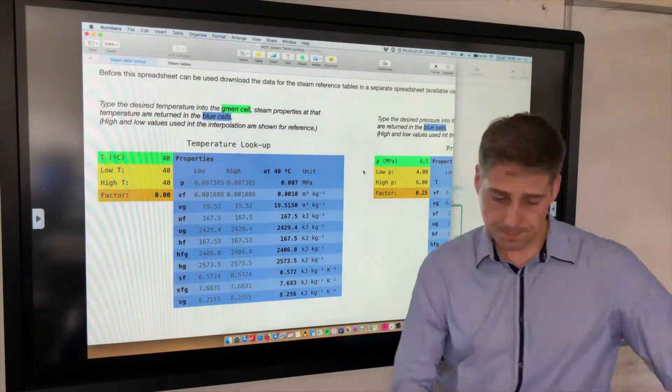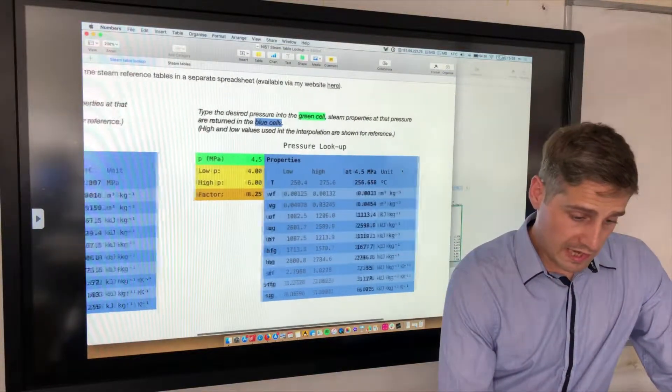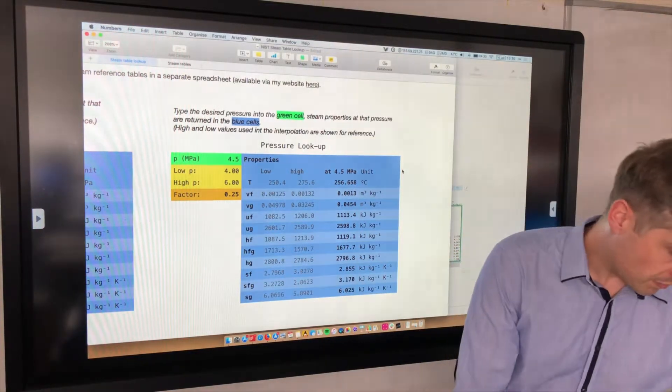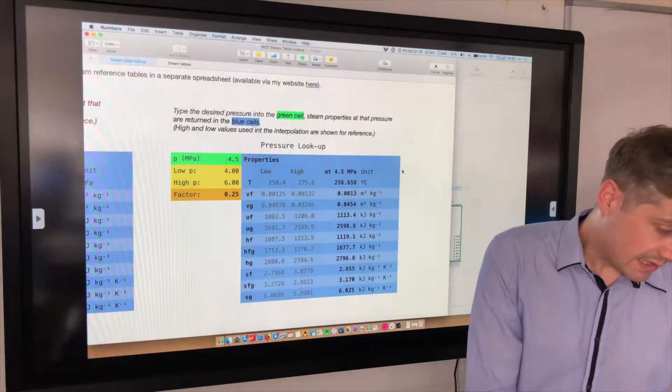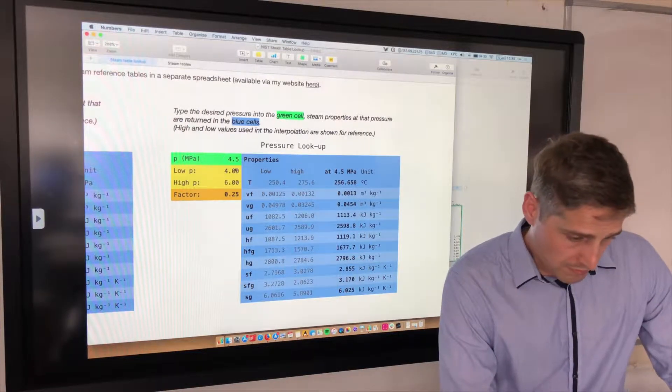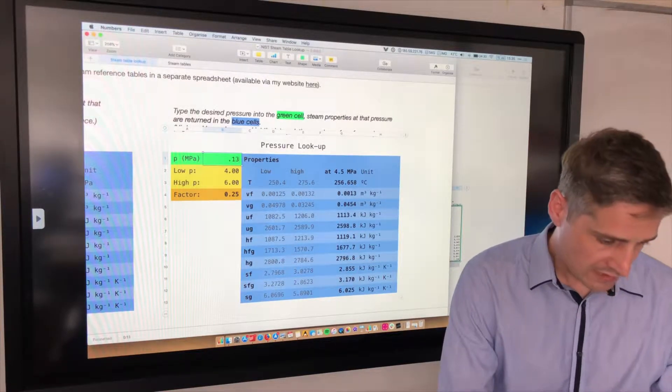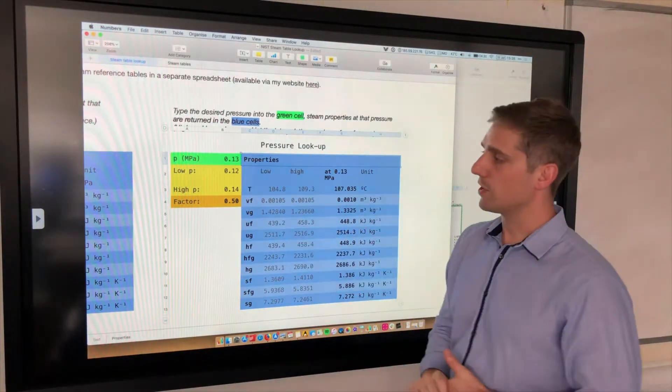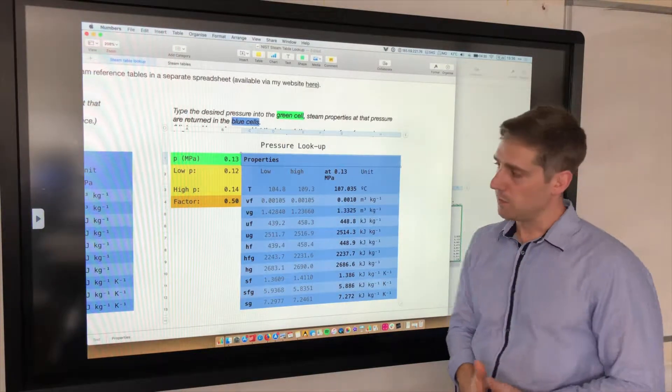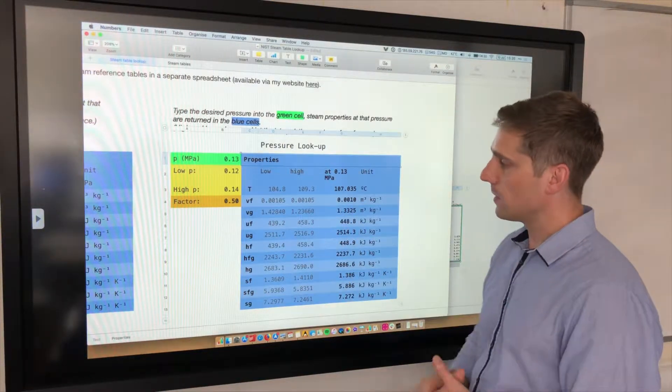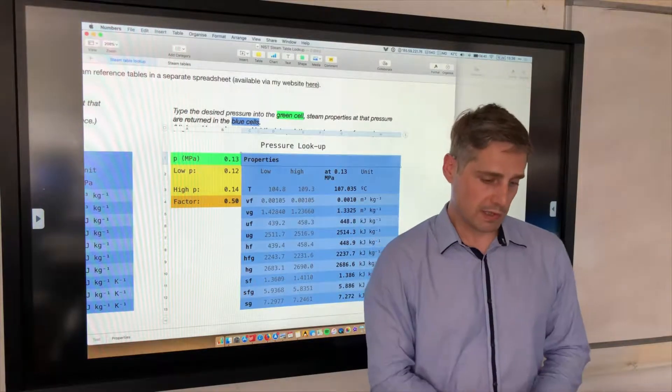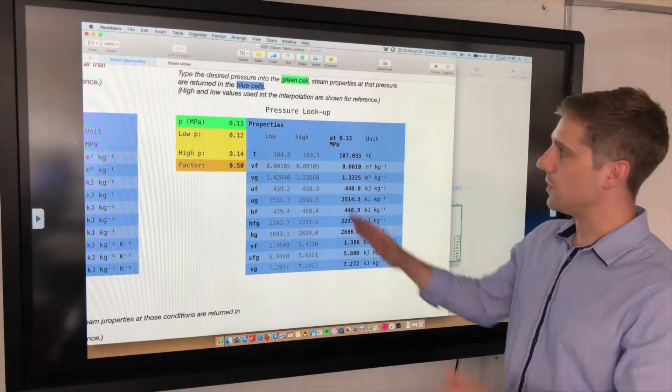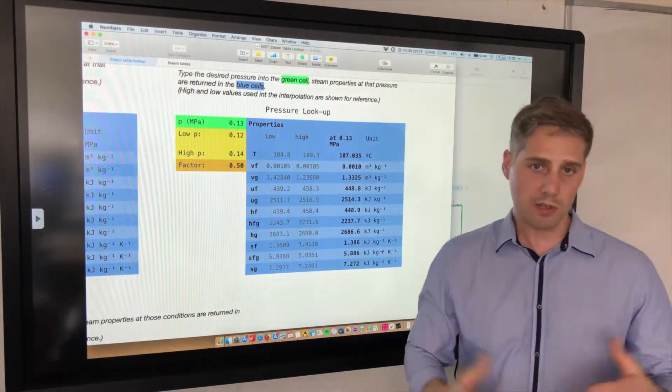This table functions in much the same way, except it's for the pressure table. If you're looking up data for a certain pressure, let's say we wanted to look up something at 0.13 megapascals. This is all in megapascals here, not kilopascals. It's looking up the low and the high pressure now, what the interpolation factor is, and then it provides the corresponding properties for steam there. That's how the temperature and the pressure tables work. They're quite straightforward.